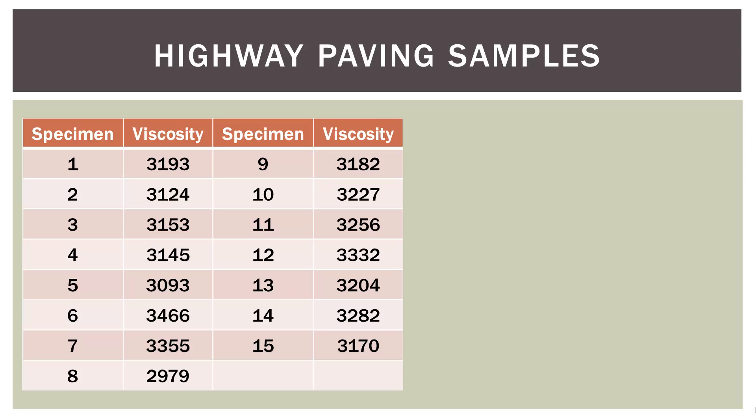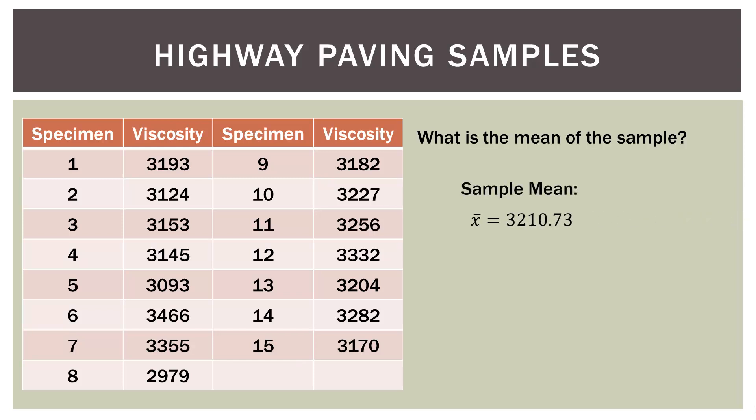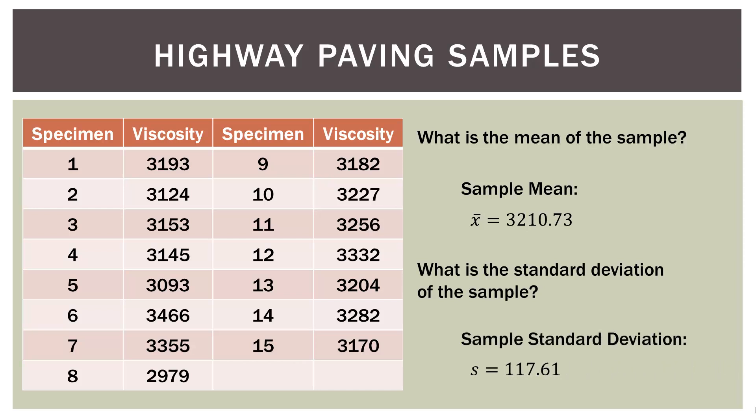Here are the 15 specimens that the manager took. In the first specimen, the viscosity was 3,193; specimen 2 was 3,124; and so on — those are the 15 measurements. The first question is: what is the mean, or the average, of this overall sample? When I talk about a sample, I am talking about the 15 measurements or the 15 specimens, not the individual measurements themselves. So what is the mean of the sample? It turns out the sample mean here is 3,210.73. Now the standard deviation of this sample is 117.61.